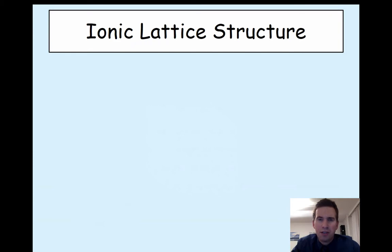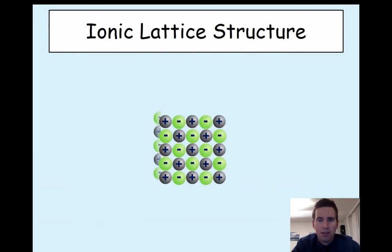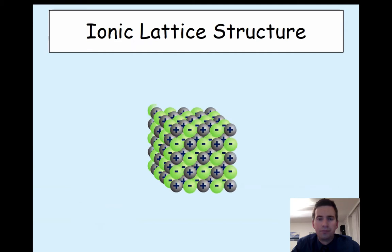So how do we represent giant ionic lattices? We tend to put them like this. Now a lattice is a giant structure that repeats the same pattern in every direction. Ionic lattices are termed giant because they do not have a certain amount of ions. There is theoretically an infinite amount of ions you could include.